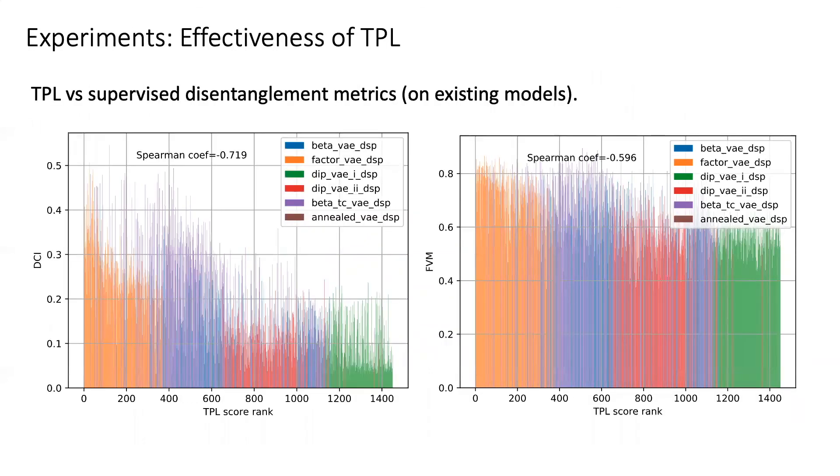For example, for experiments, we first show the effectiveness of our proposed TPL scores to see if it can correlate well with existing supervised disentanglement metrics. For this page, we can see the TPL correlates well with these metrics.